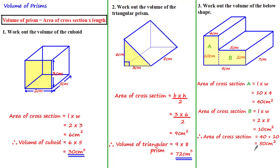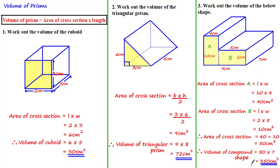Now we have the area of the cross-section. To find the volume we multiply by the length of seven centimeters, giving a volume of 350 centimeters cubed for the compound shape.